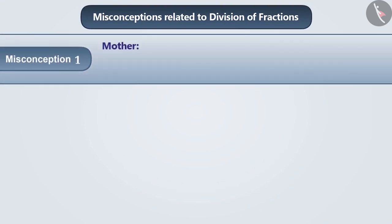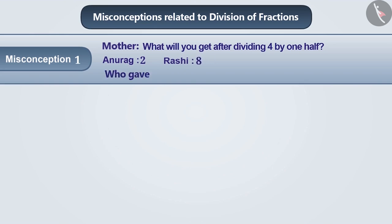Misconception 1. Mother asked the children, what will be the result of dividing 4 by a half? Anurag said 2 and Rashi said 8. So who of the two gave the right answer?